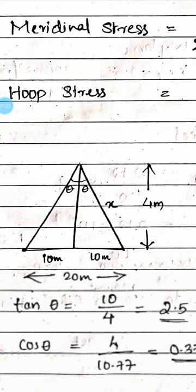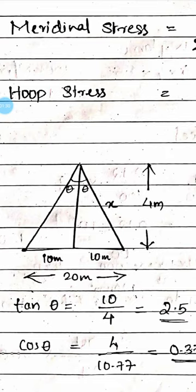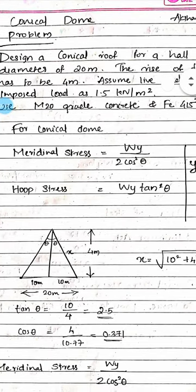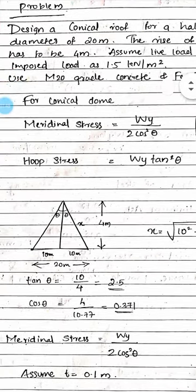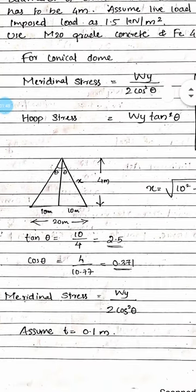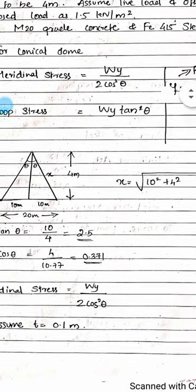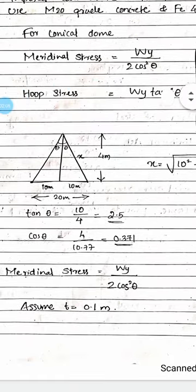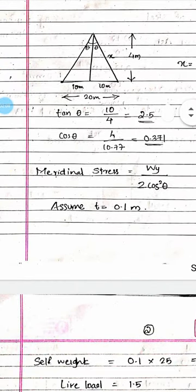This is the conical shape. The diameter is 20 meters and the rise is 4 meters. We find theta and the slant height X. Tan θ equals 10 divided by 4, and cos θ equals 4 divided by 10.77, where X equals the root of 10² plus 4², giving X = 10.77 meters.